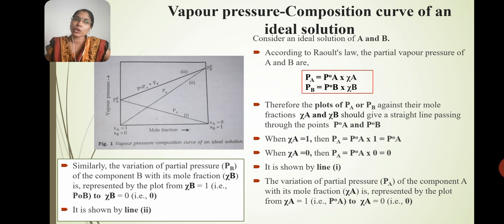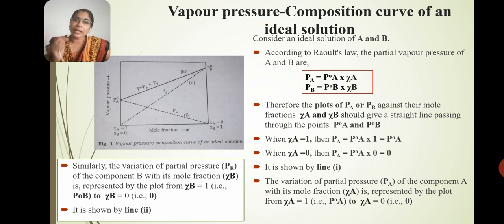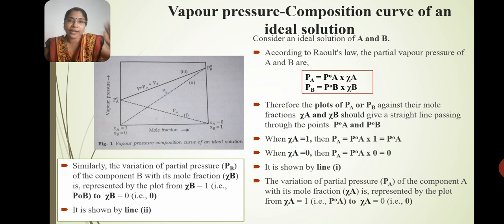That is a plot of PA and PB against chi-A and chi-B. When we draw this graph, we will get a straight line passing through the points P°A and P°B. Here we will get a straight line graph.